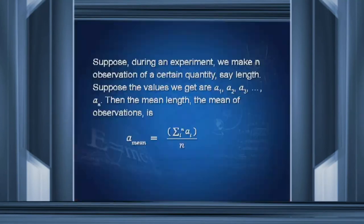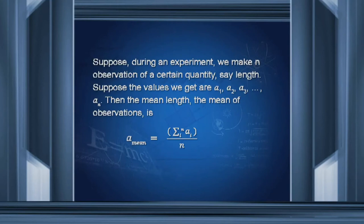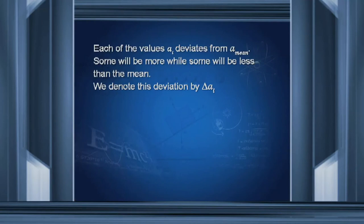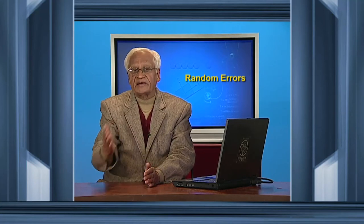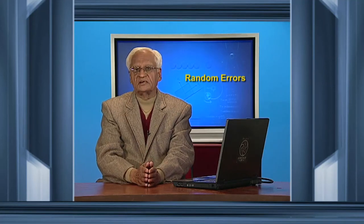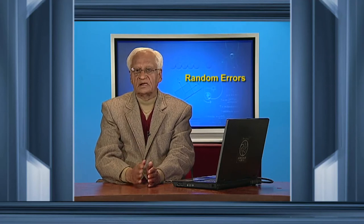Suppose during an experiment we make n observations of a certain quantity, say length, and the values we get are a₁, a₂, a₃, up to aₙ. Then the mean length — the mean of all observations — is a_mean equal to the sum of all observations divided by n. Each value of a deviates from a_mean; for example, if you take the mean of 6, 7, and 8, the mean is 7, and both 6 and 8 deviate from 7. Each observation may deviate from the mean, sometimes positively, sometimes negatively.